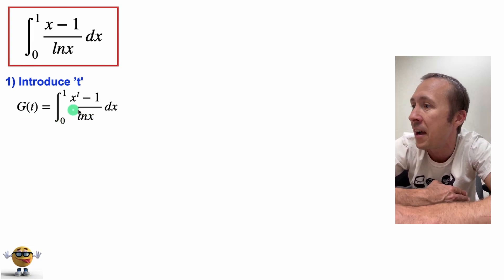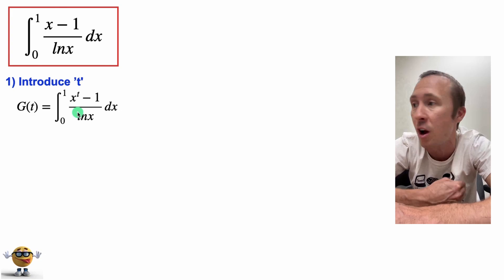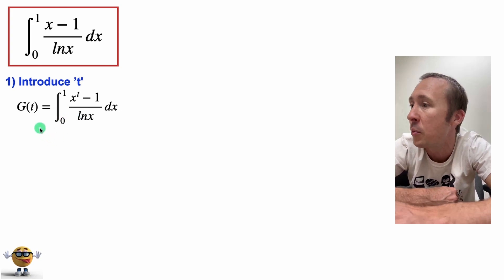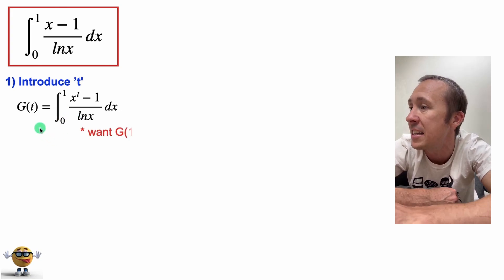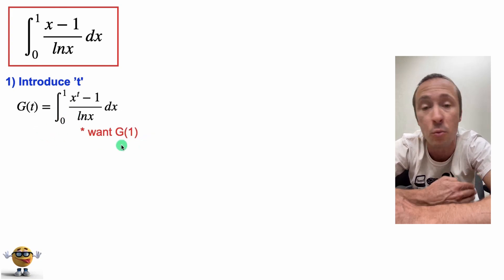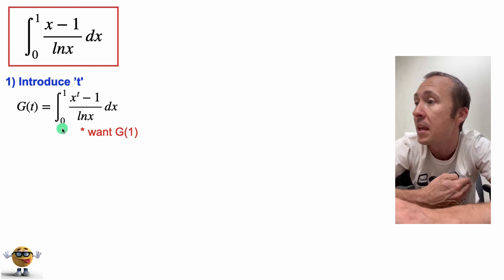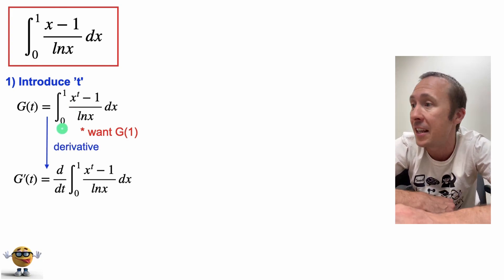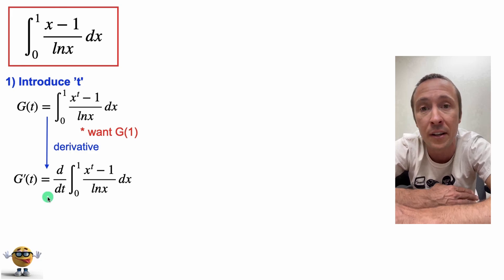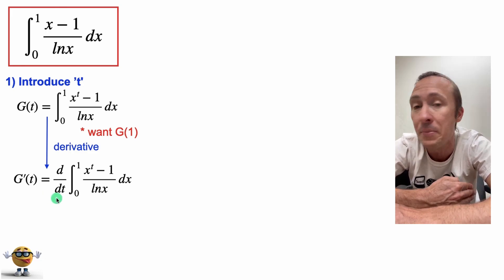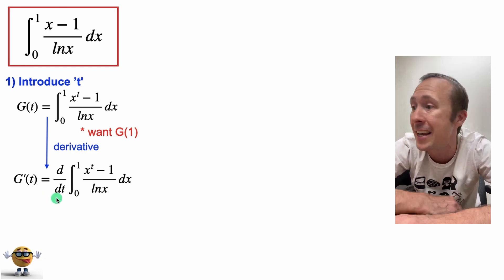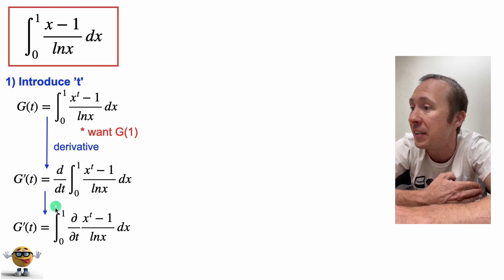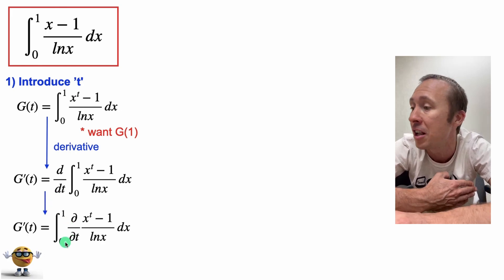We define this as a function of t, because after we evaluate the integral, x is gone and it's a function of t. So what we want is g(1), and then we're basically done. Now we don't know how to do the integral directly, but we do know how to take the derivative. So we're going to take the derivative with respect to the new parameter t, and there's a sweet trick that allows us to bring the derivative right inside the integral.